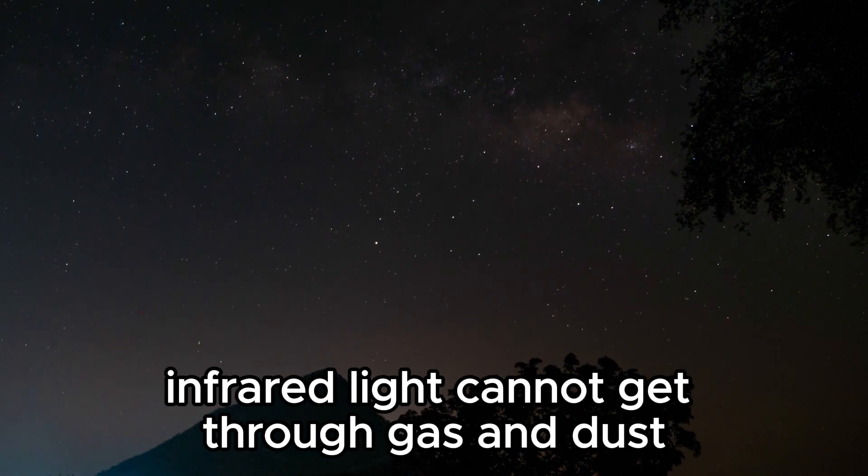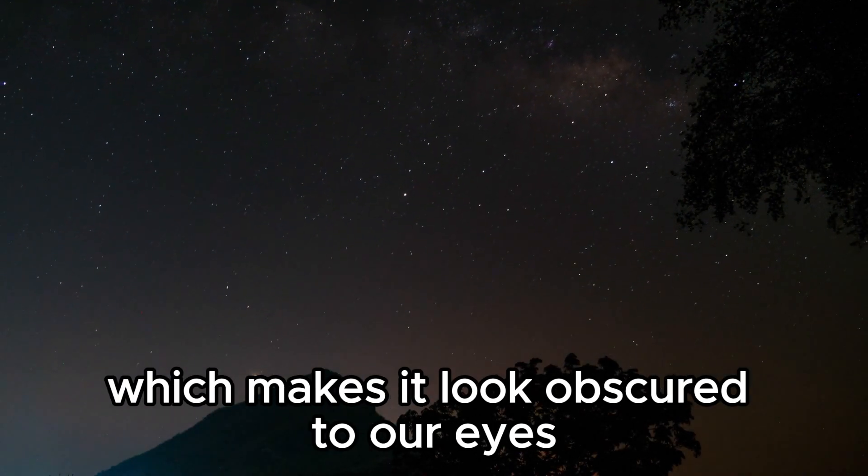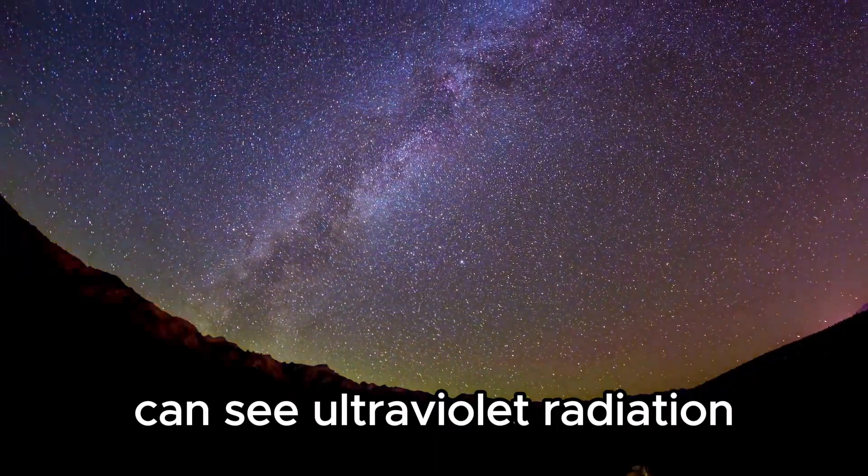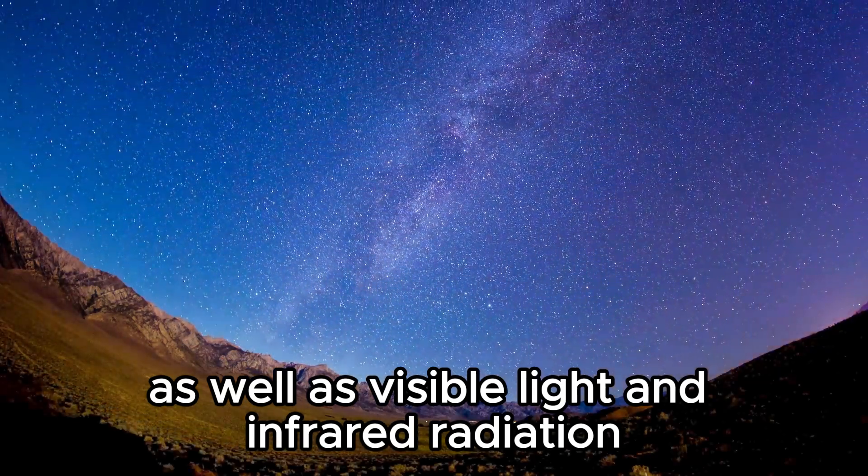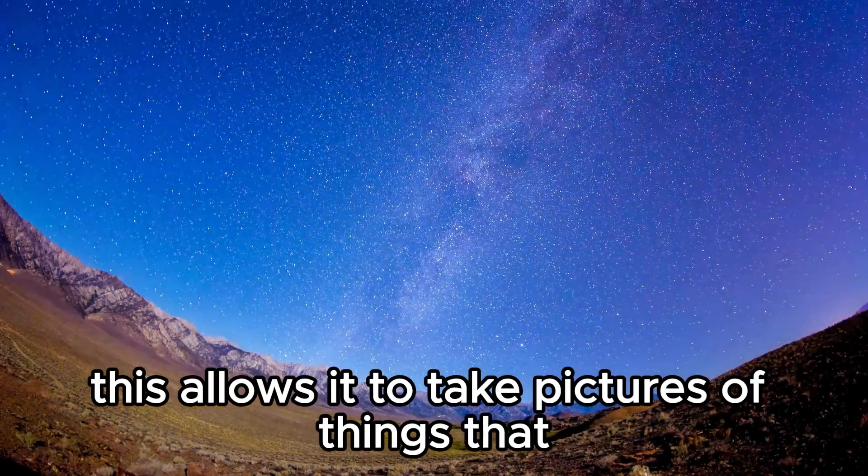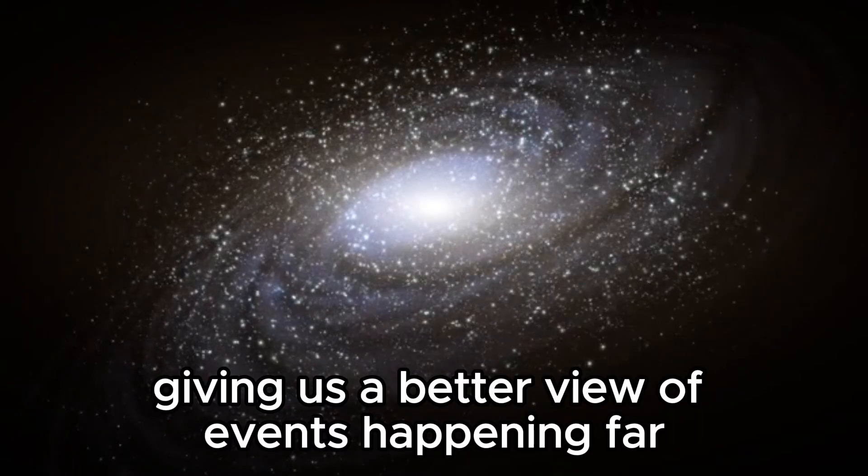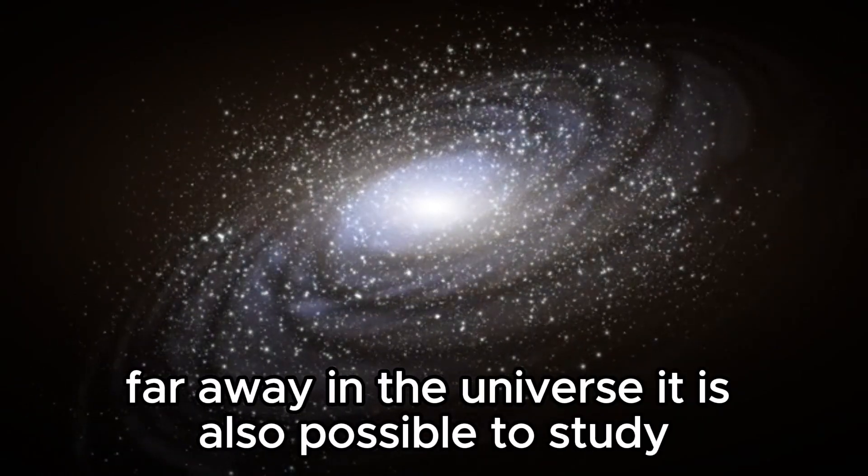Infrared light can get through gas and dust, which makes it look obscured to our eyes. Webb, on the other hand, can see ultraviolet radiation as well as visible light and infrared radiation. This allows it to take pictures of things that are hidden by dust and gas, giving us a better view of events happening far away in the universe.